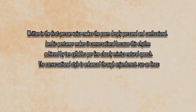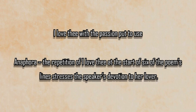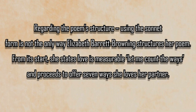The conversational style is enhanced through enjambment — run-on lines. For example, I love thee to the depth and breadth and height my soul can reach when feeling out of sight for the ends of being and ideal grace. Iambic pentameter is particularly effective on line 9, with the stress on passion: I love thee with the passion put to use. Anaphora, the repetition of I love thee at the start of six of the poem's lines, stresses the speaker's devotion to her lover. Using the sonnet form is not the only way Elizabeth Barrett Browning structures her poem — she states love is measurable, let me count the ways, and proceeds to offer seven ways she loves her partner.